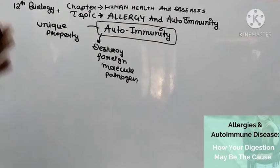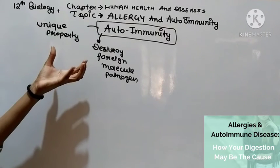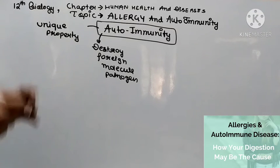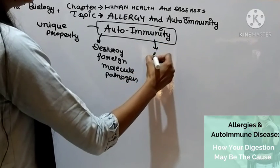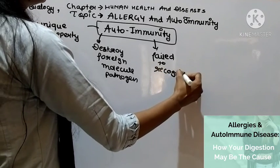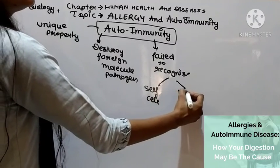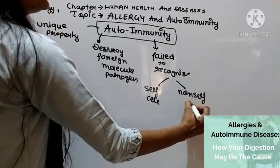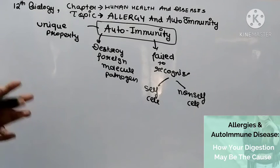But sometimes the immune system fails to recognize the self and non-self condition. That means sometimes our body fails to show proper autoimmunity — it becomes unable to distinguish the non-self from the self.